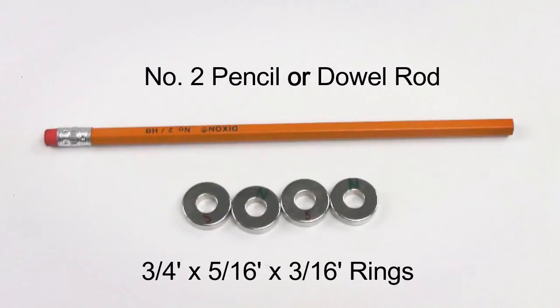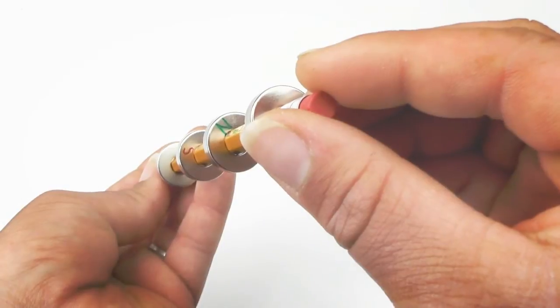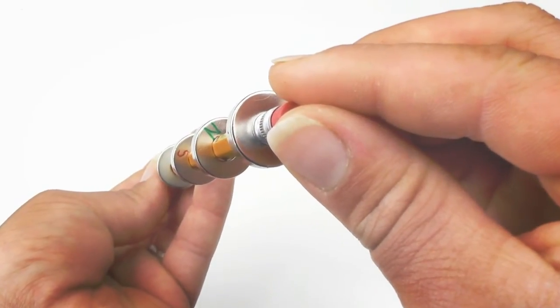By aligning the poles north to south of the magnets, we can levitate the ring magnets by using the repulsive force of aligned opposite poles.